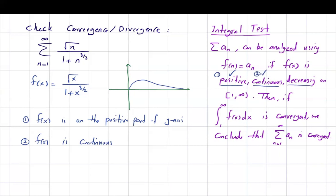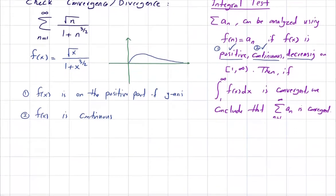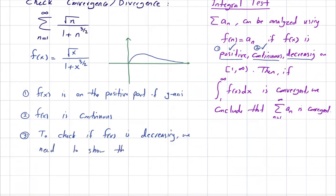What about being decreasing? By looking at the graph you can analyze this a little bit, but on the exam or on homework, if they say show step-by-step work, you need to take the derivative of this function and show that the derivative is negative. To check if f(x) is decreasing, we need to show that f prime of x is a negative function.